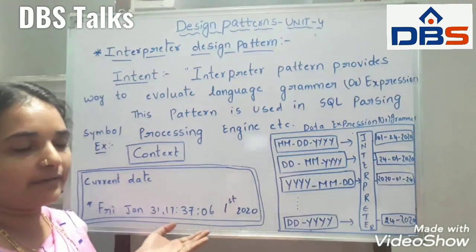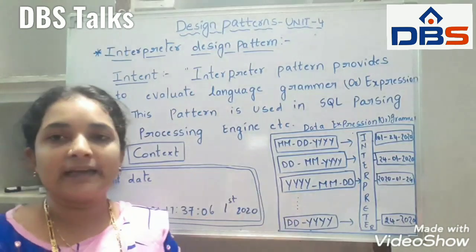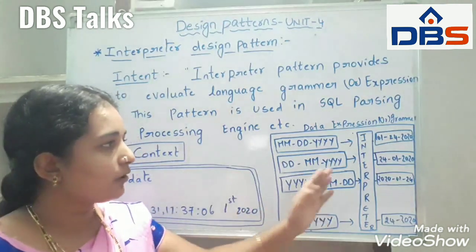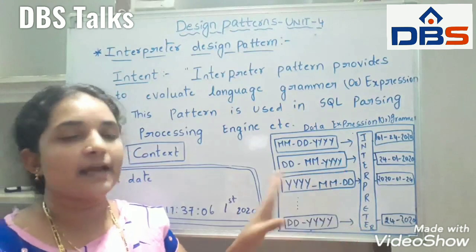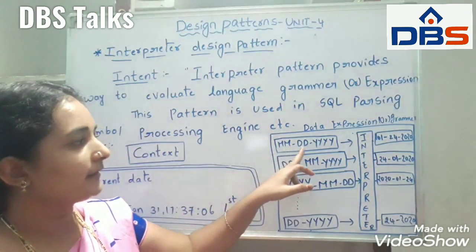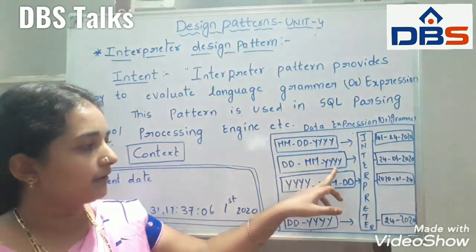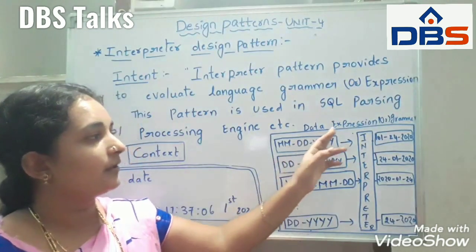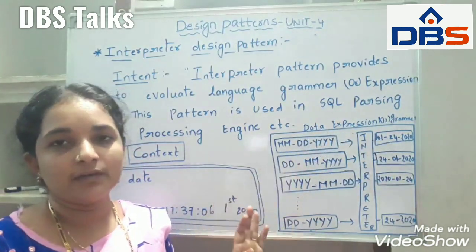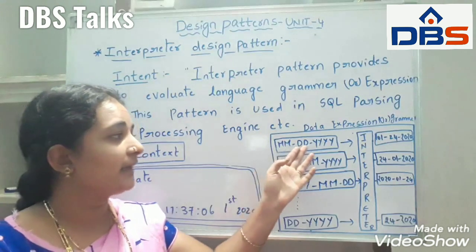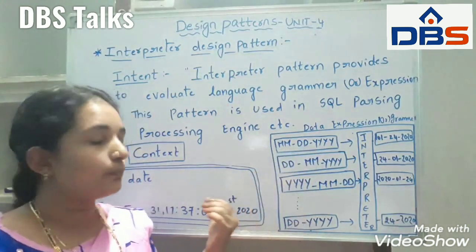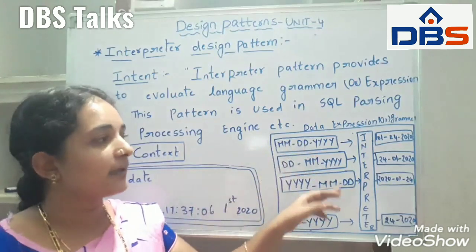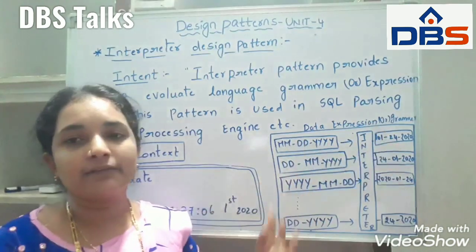Whatever the current data I am having, the data is passed to the interpreter. In this interpreter, I am having some expressions or data grammar — month/date/year, date/month/year, year/month/date, and date/year — these are the different types of date expression or grammar formats. If the user wants a particular format, say month/date/year, you select that and pass whatever context information is available to the interpreter. After that, our data will be converted in the form of that selected format.